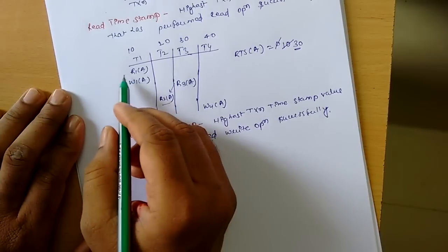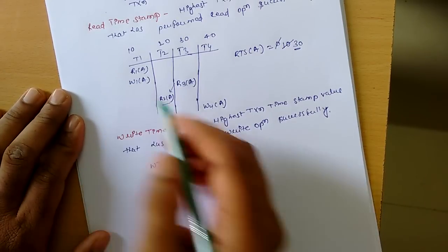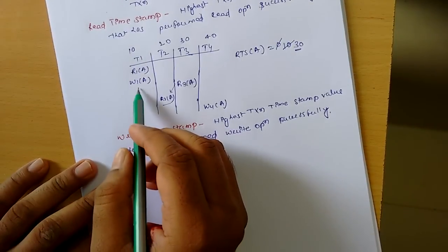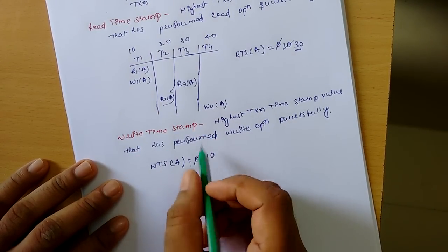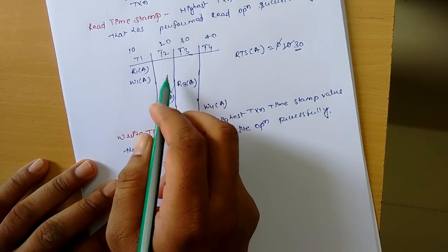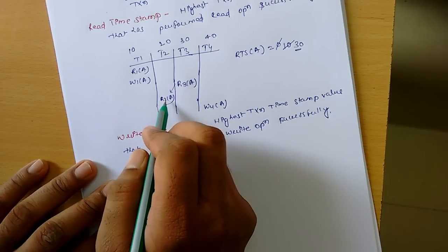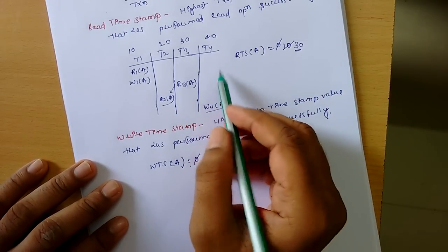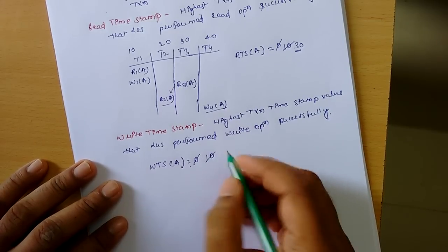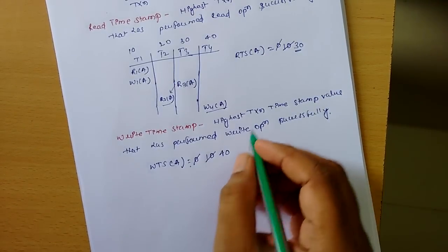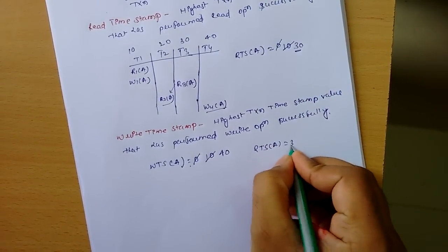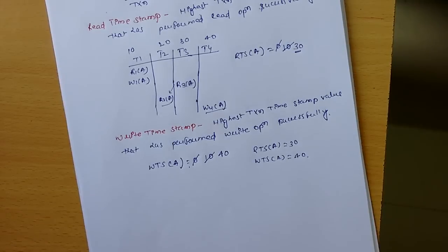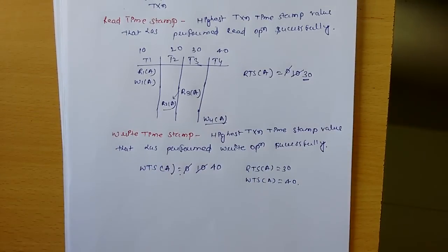Using the same example, T1 performed a write operation on A, so the write timestamp updates from 0 to 10. Then T4 performs a write operation on A. The timestamp of T4 is 40, which is greater than 10, so we update the write timestamp to 40. Therefore, the read timestamp of A is 30 and the write timestamp of A is 40.